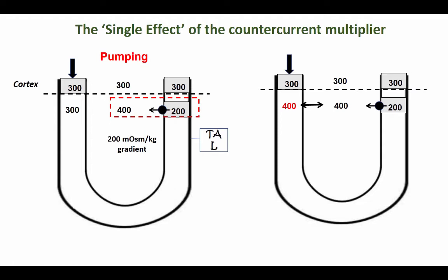So as a result of this osmotic gradient, we can have equilibration. Now remember that the thin descending limb of the loop of Henle is impermeable to salts, so salts cannot be used to equilibrate, but it is very permeable to water because of all the aquaporins.